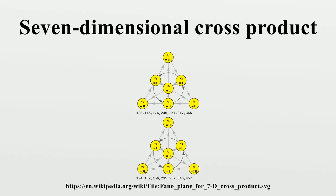The seven-dimensional cross-product has the same relationship to octonions as the three-dimensional product does to quaternions. The seven-dimensional cross-product is the only other non-trivial bilinear product of two vectors that is vector-valued, anticommutative, and orthogonal. In other dimensions there are vector-valued products of three or more vectors that satisfy these conditions, and binary products with bivector results.